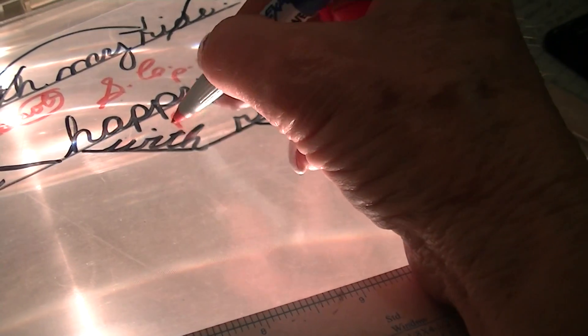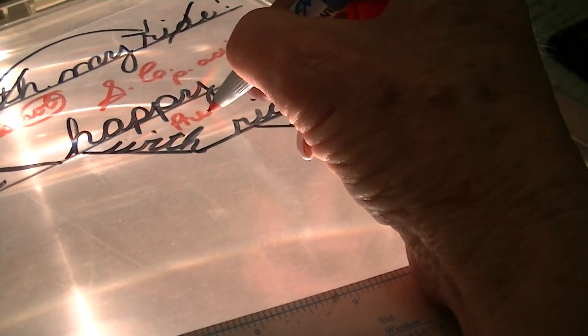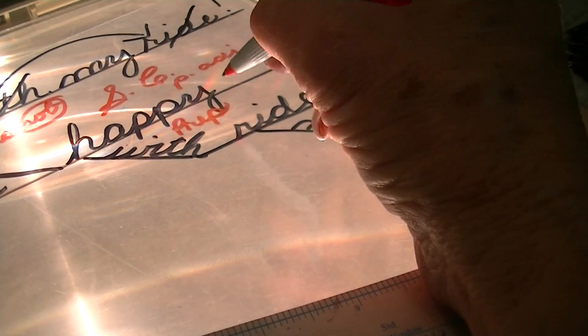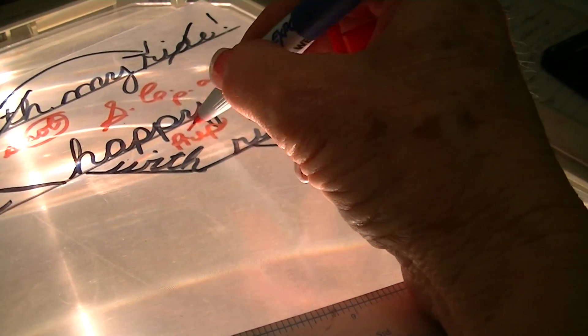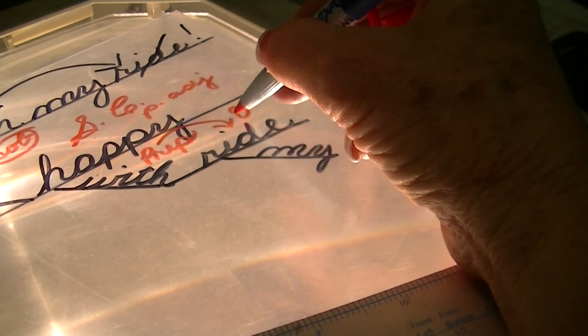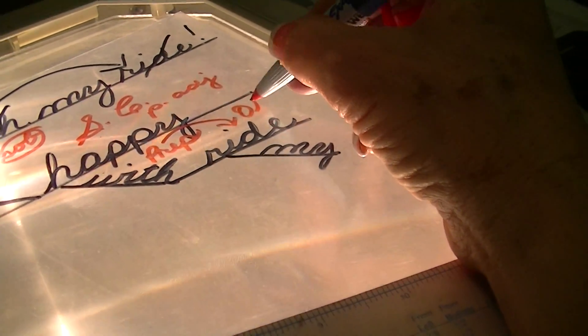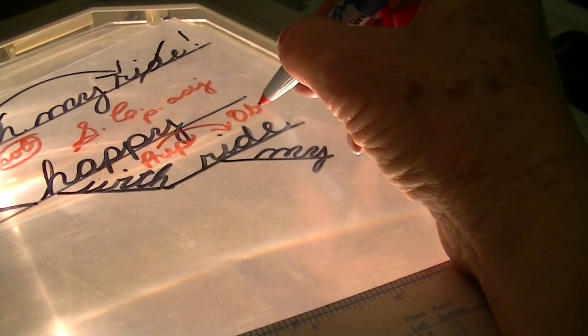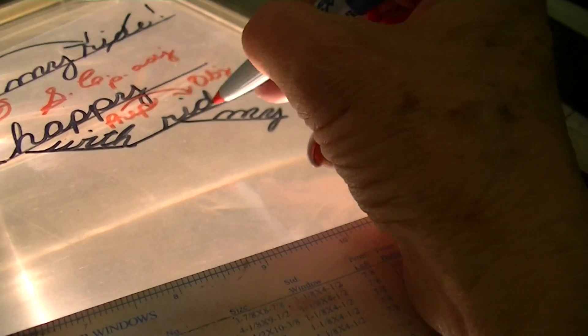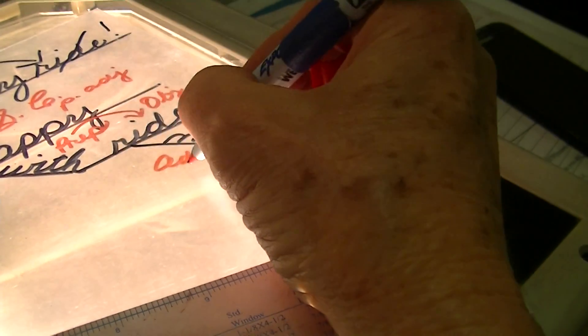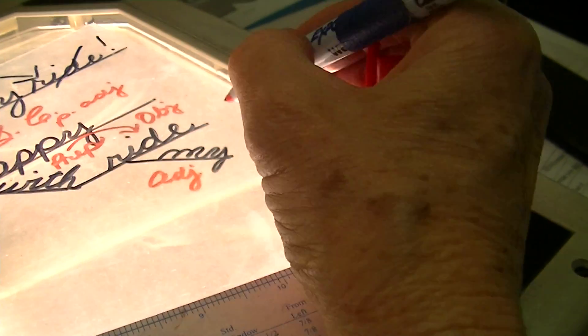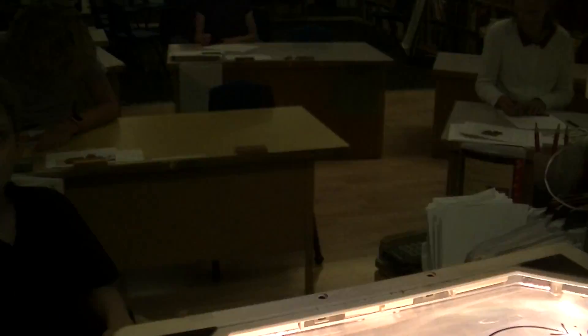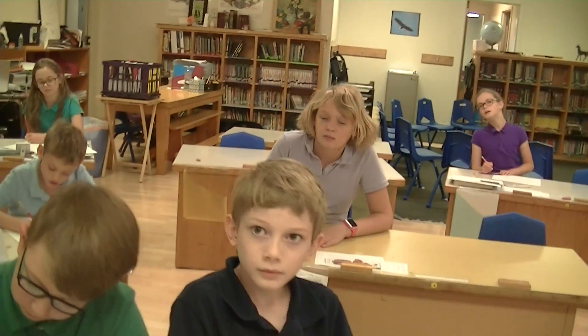'With' is our preposition. And 'right' is the object of the preposition. And 'my' is an adjective. Good job. And now we're going to do another sentence.